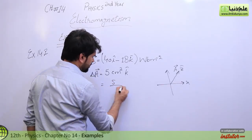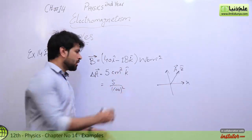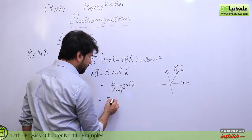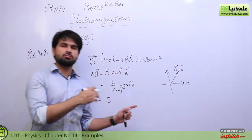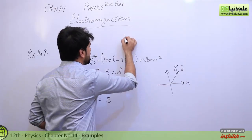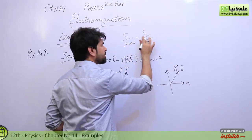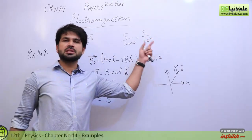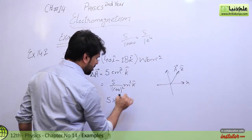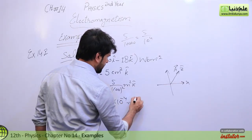To convert centimeter square to meter square, we divide by 100 squared, which is 10,000. So 5 centimeter square equals 5 over 10 raised to the power 4, which is 5 times 10 raised to the power minus 4 meter square in the k-cap direction.